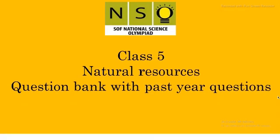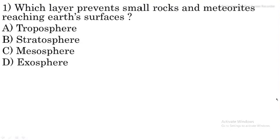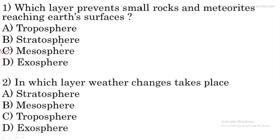The first question is: which layer prevents small rocks and meteorites from reaching Earth's surface? The options are troposphere, stratosphere, mesosphere, and exosphere. Mesosphere is the right answer because mesosphere prevents small rocks and meteorites from reaching Earth's surface.